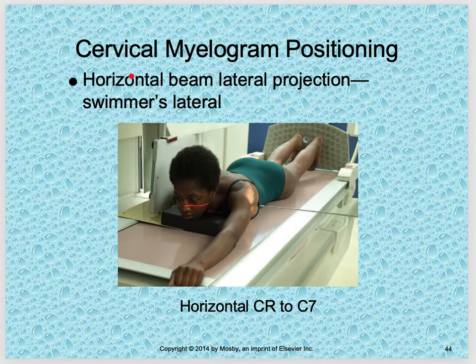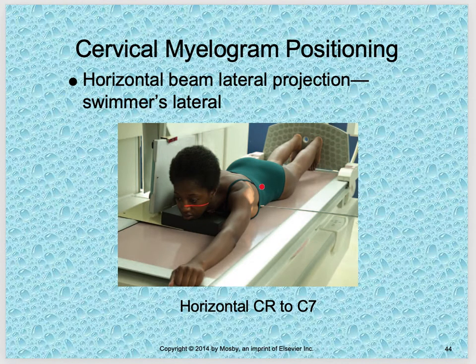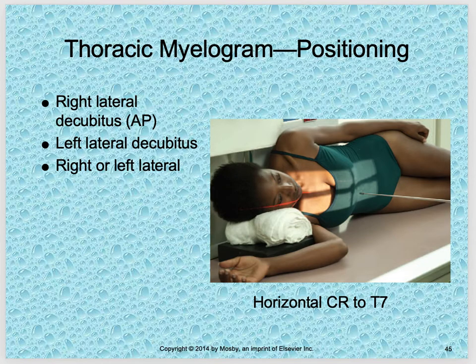For cervical myelogram positioning, you may also need to do a swimmer's position depending on the shoulders. If the shoulders can't come down far enough and are blocking the C-spine, a swimmer's position with a horizontal central ray to C7 is needed to pick up the rest of the cervical spinal canal.